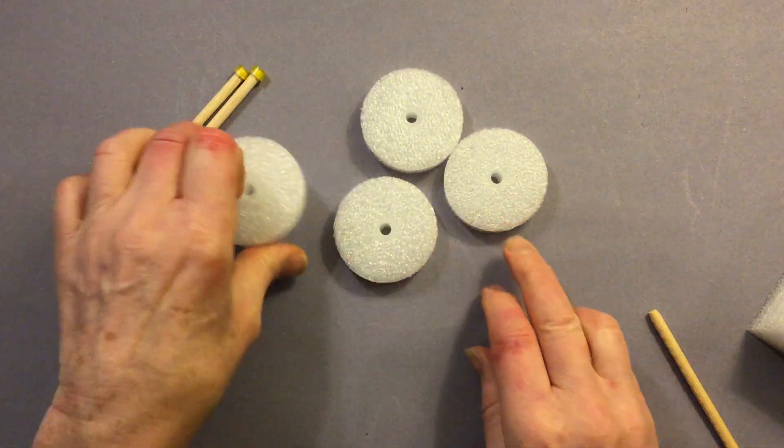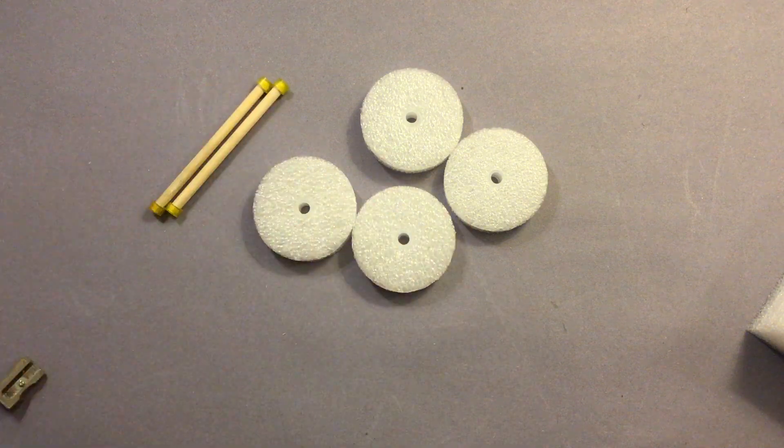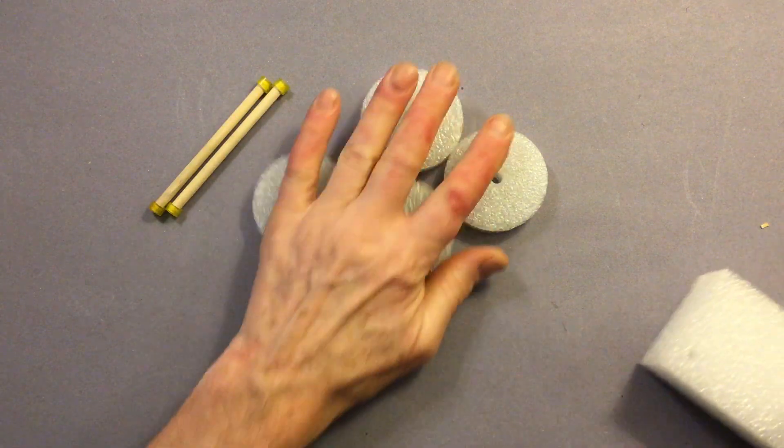So there's four wheels and two axles with the clips already fitted and now we'll move on to the chassis.